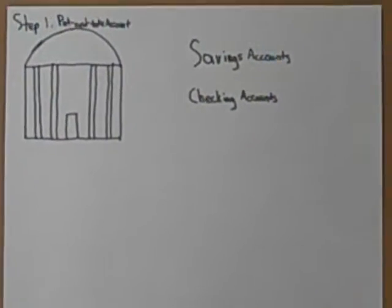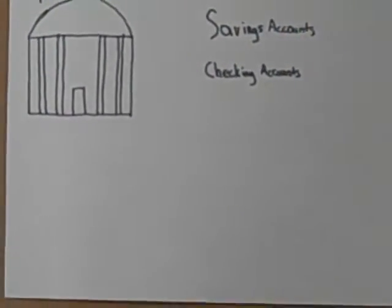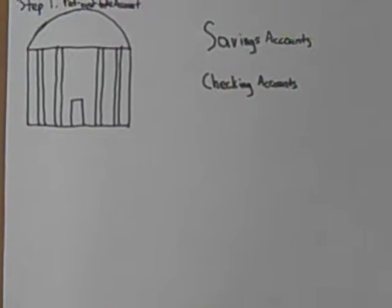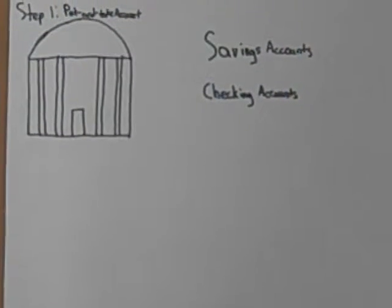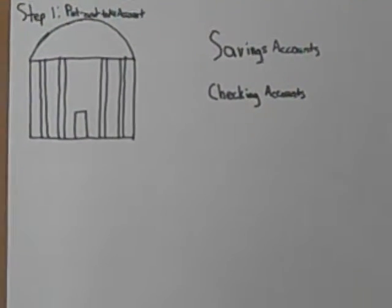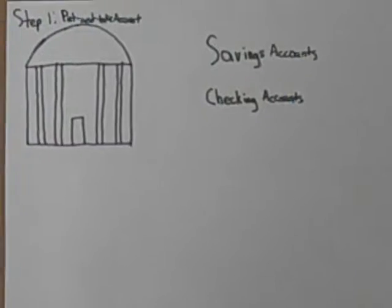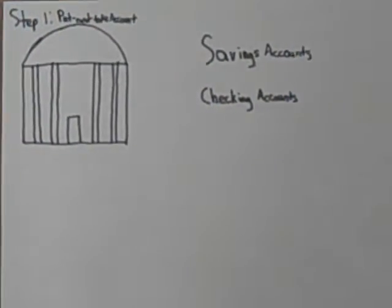Step one: put and take accounts. This is usually a savings or checking account. This has a low risk, but also low return. Should start as soon as possible.